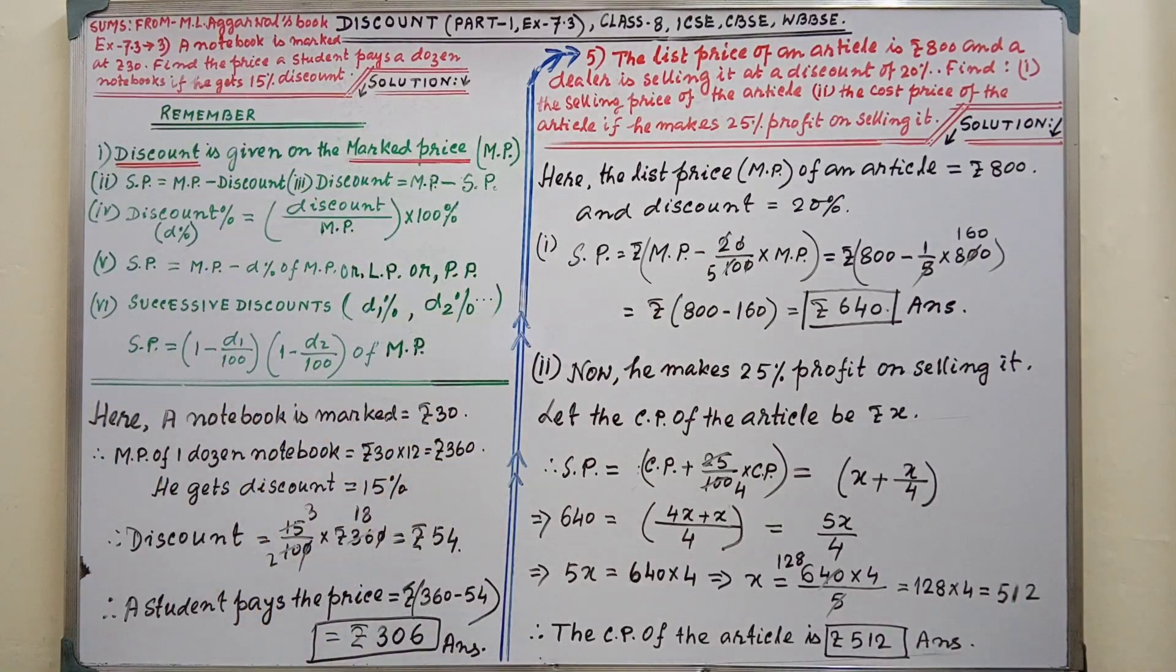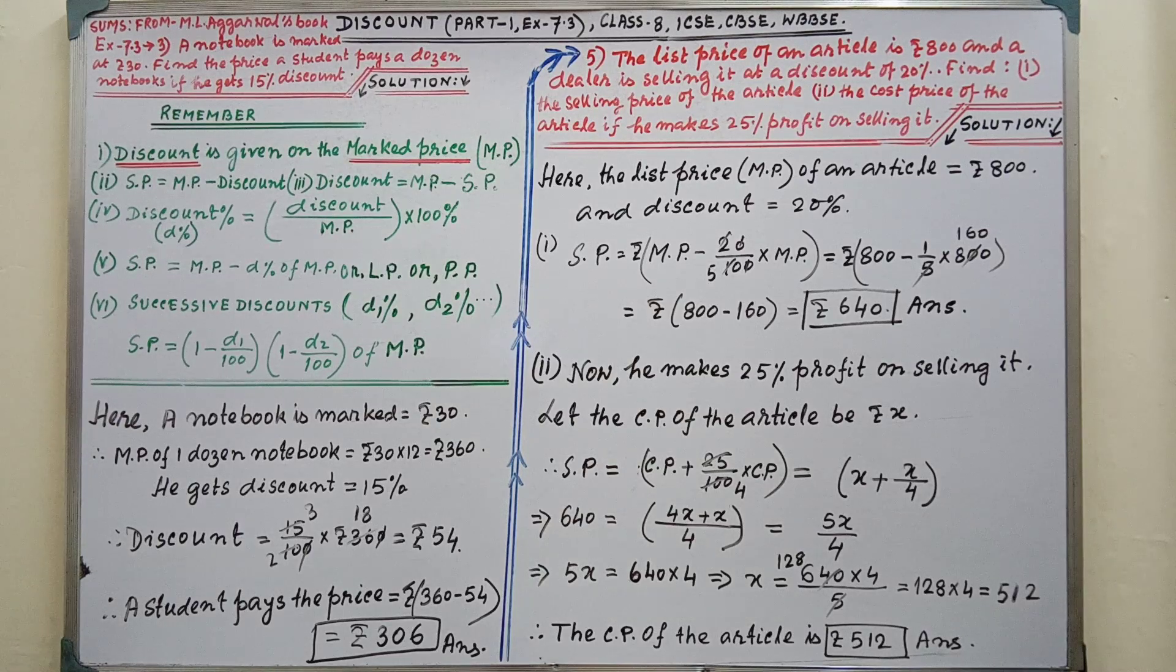Sum number 3: A notebook is marked as Rs 30. Find the price a student pays for a dozen notebooks if he gets 15% discount.